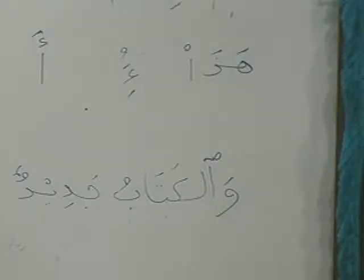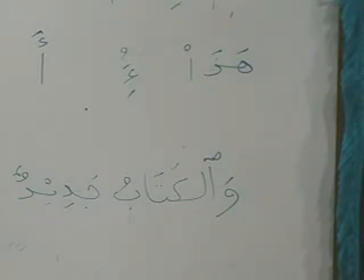Ammu at-talibi Ghaniyun — somebody is very rich. Translate: uncle of the talib. Where is mubtada? Ammu — wa huwa mudaf. And then mudafili. And where is the khabar? Ghaniyun. Note: ammu is father's brother, and mother's brother is khalu.